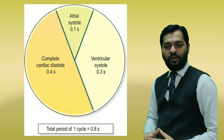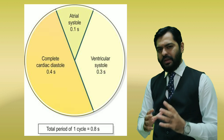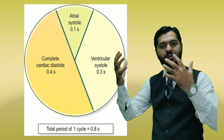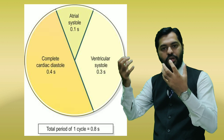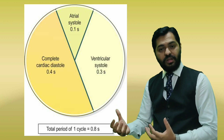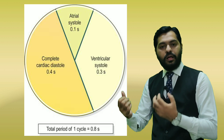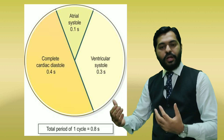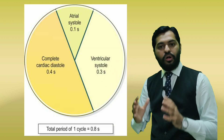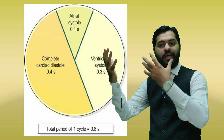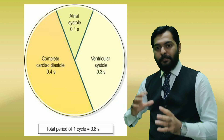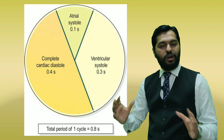During atrial systole, both atria contract and blood is pumped into the respective ventricles. During ventricular systole, blood is pumped into the respective arteries. During joint diastole, when all four chambers are relaxing, the atria are filled with blood.